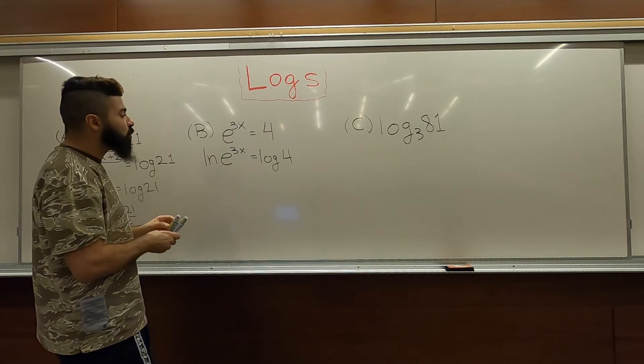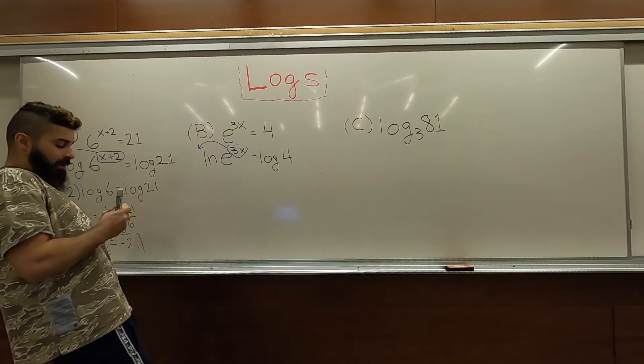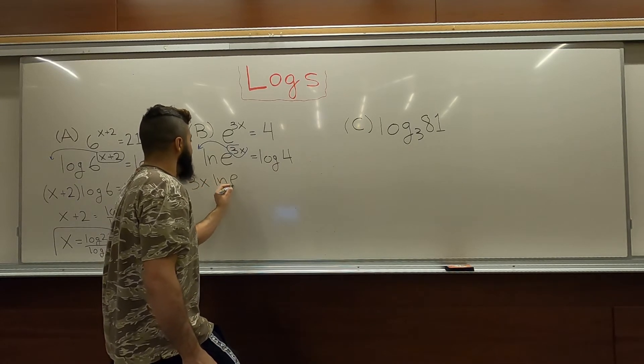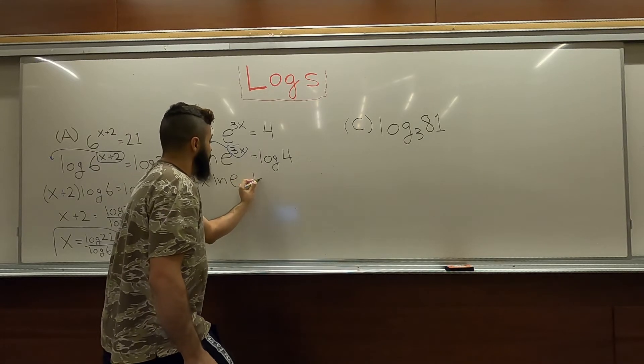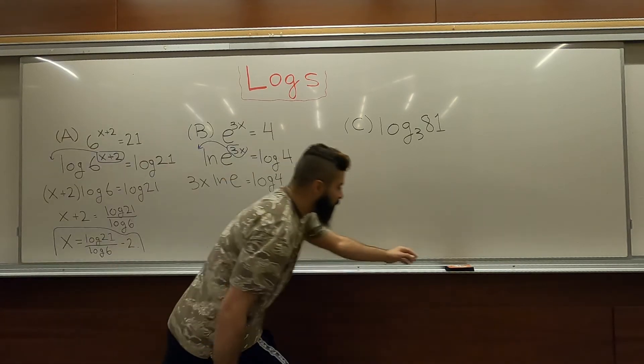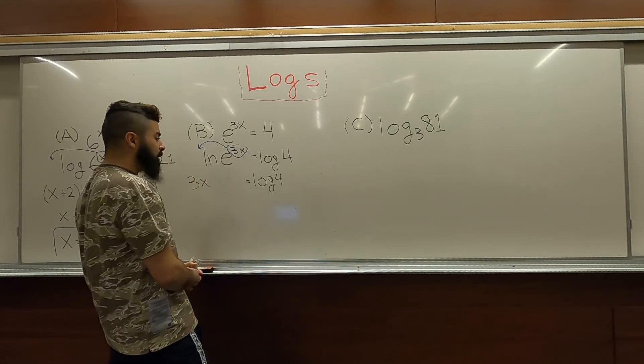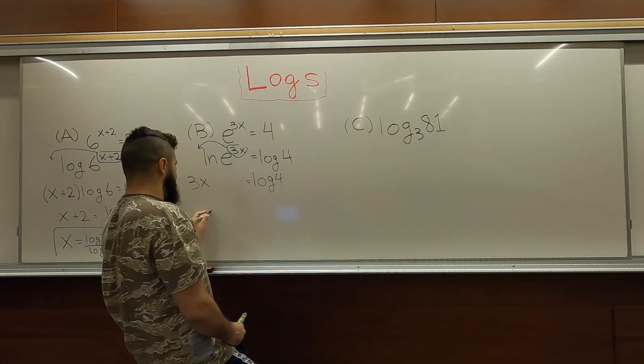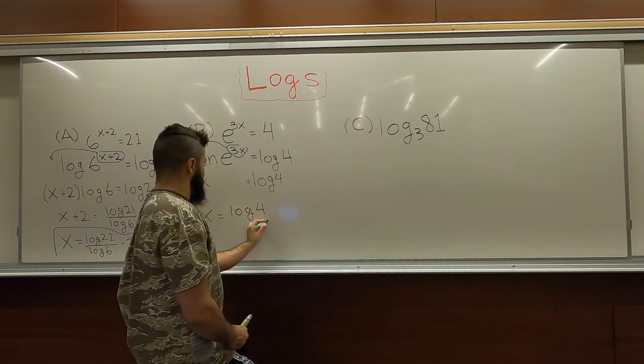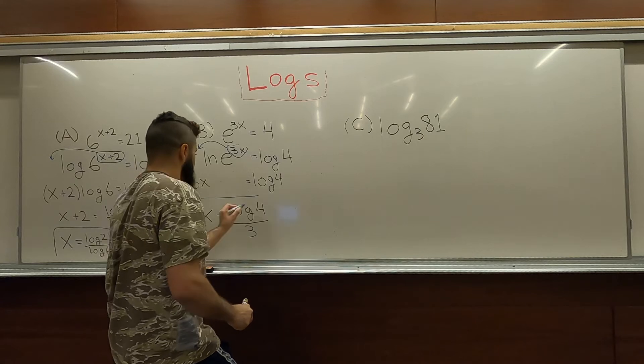Again, the exponent can drop down. So, the exponent comes out front. And then we get 3x ln of e is equal to log of 4. ln of e is really just equal to 1 though. So, we can kind of just forget about the ln of e. So, 3x equals log 4. Divide both sides by 3. x equals log 4 divided by 3. Is the answer for example b.